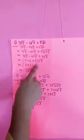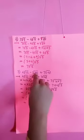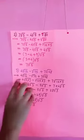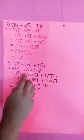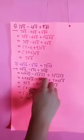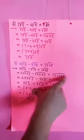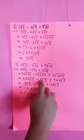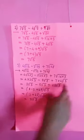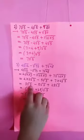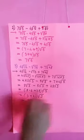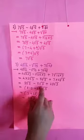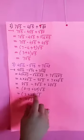Sub-question 3: 4 cube root 12 minus 7 cube root 75 plus 7 cube root 48. Working: 4 cube root (4×3) minus cube root (25×3) plus 7 cube root (16×3) equals 4 into 2 cube root 3 minus 5 cube root 3 plus 7 into 4 cube root 3, equals 8 cube root 3 minus 5 cube root 3 plus 28 cube root 3. So (8 - 5 + 28) cube root 3 equals 31 cube root 3. Answer is 31 cube root 3.